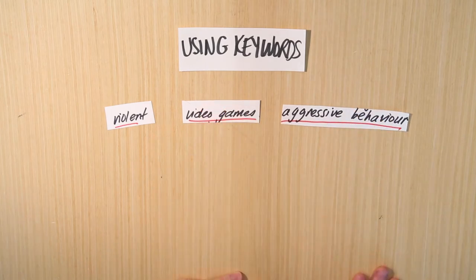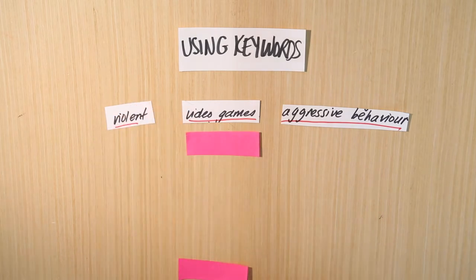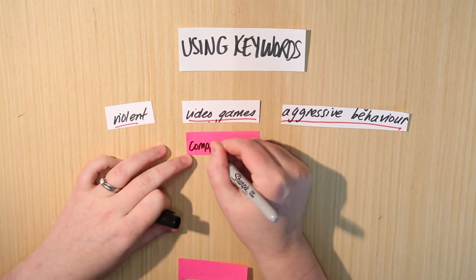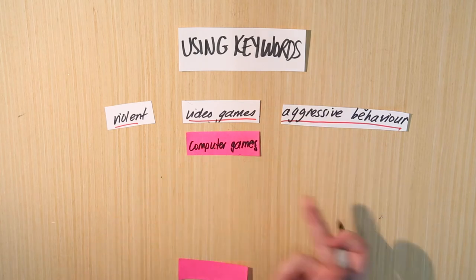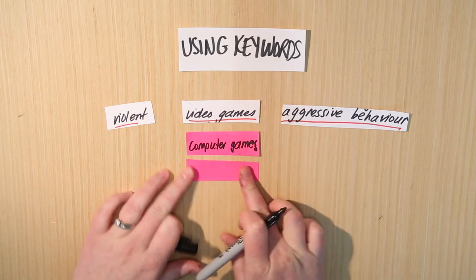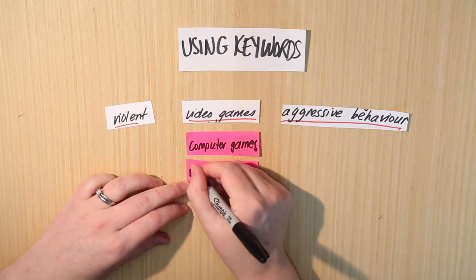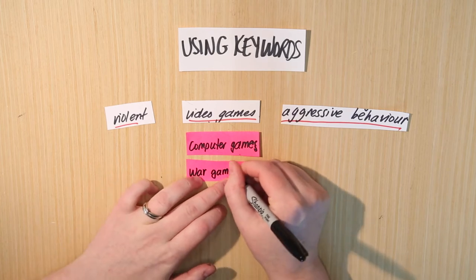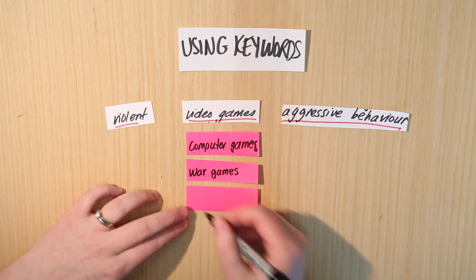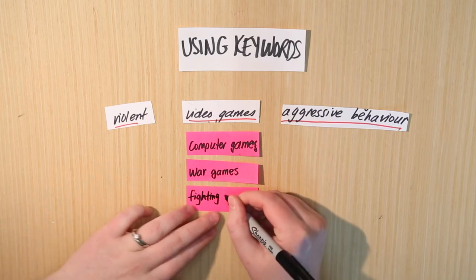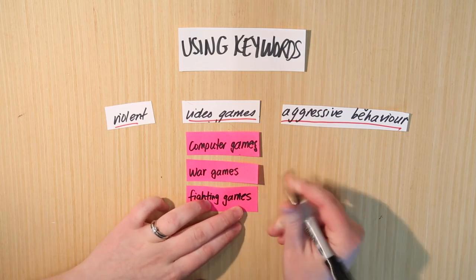Different researchers working on this topic might have used slightly different words to get at the same idea. For example, someone might have used the term 'computer games,' or they might have been speaking about a specific computer game and didn't use the term 'video games' — but we still think it's relevant. We could also think about what kind of video games exist, like 'war games' or 'fighting games.' We're trying to think of synonyms so we can search them all and capture articles that use different language.